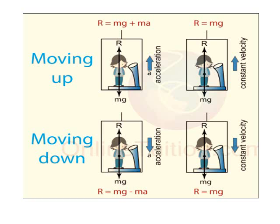When the lift moves in upward direction with constant velocity, then the acceleration will be 0 and R will be equals to mg.